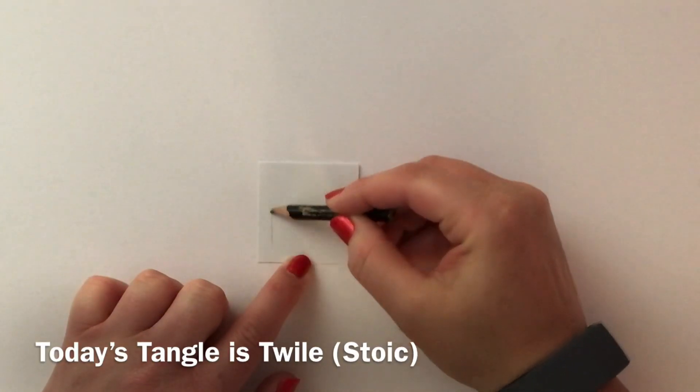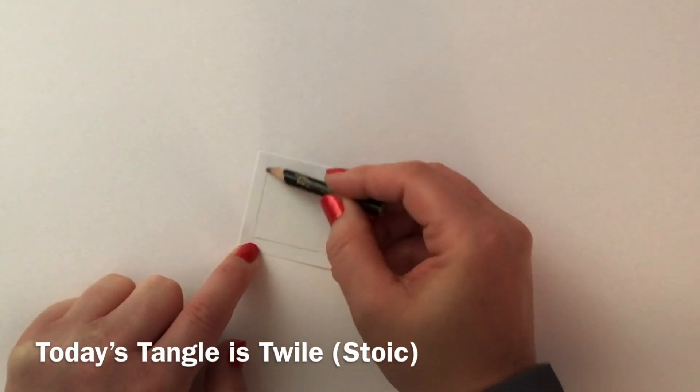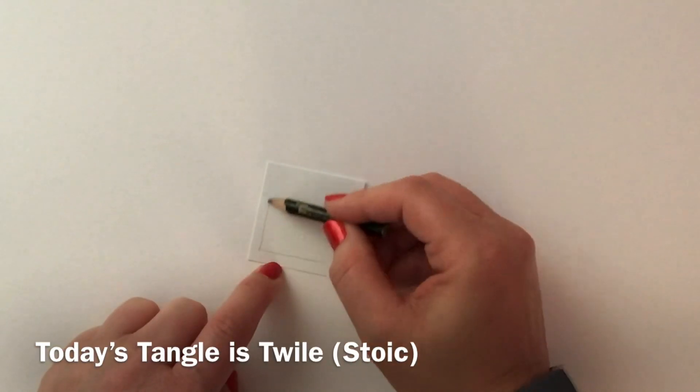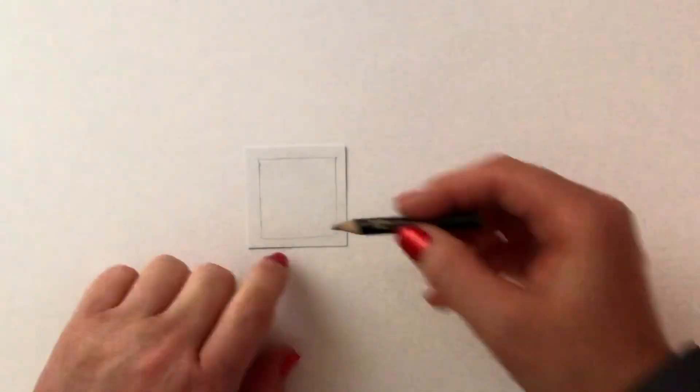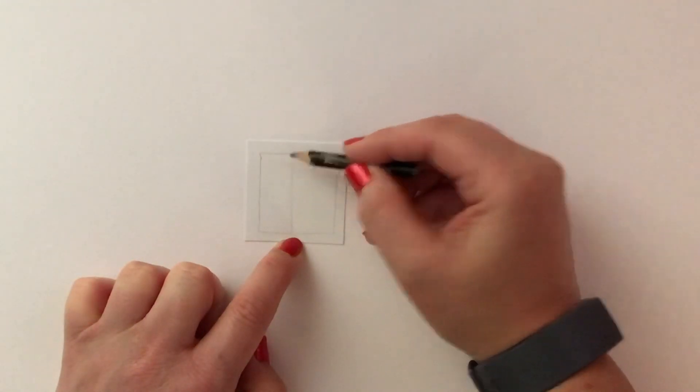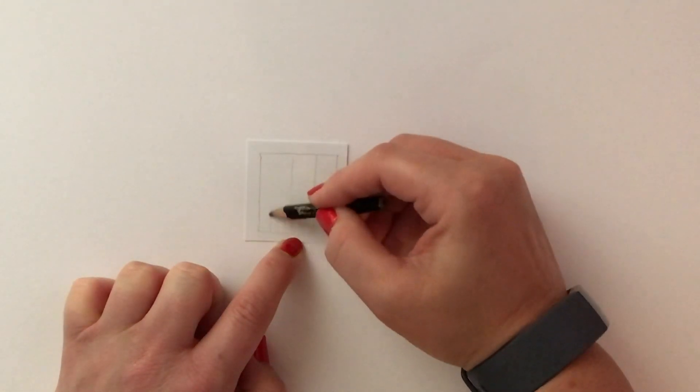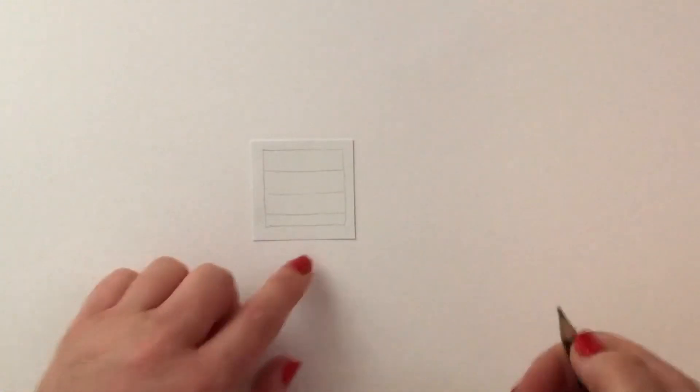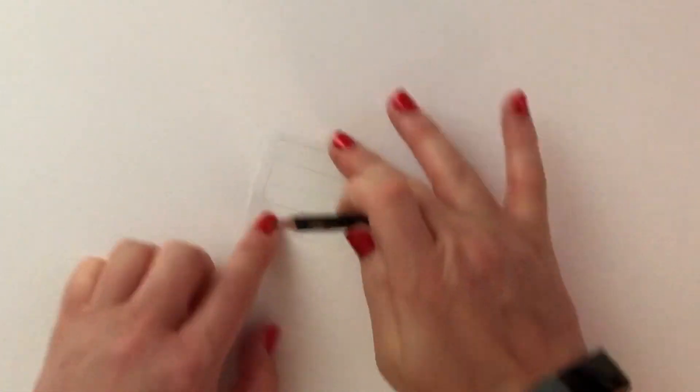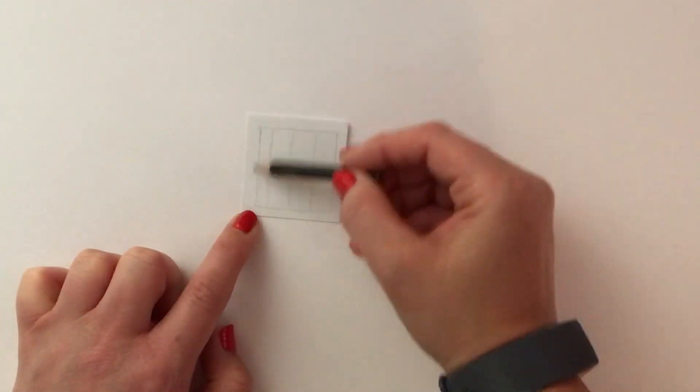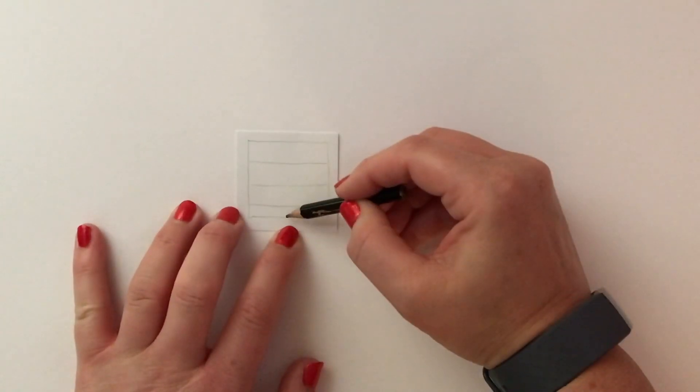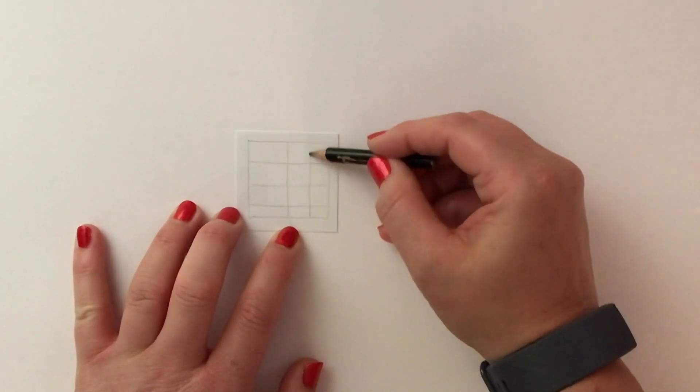So using my pencil, I'm just going to draw a square box as my border and then inside my border again, I'm using my pencil but those of you that feel confident please start off with your pen and I'm just subdividing it down.